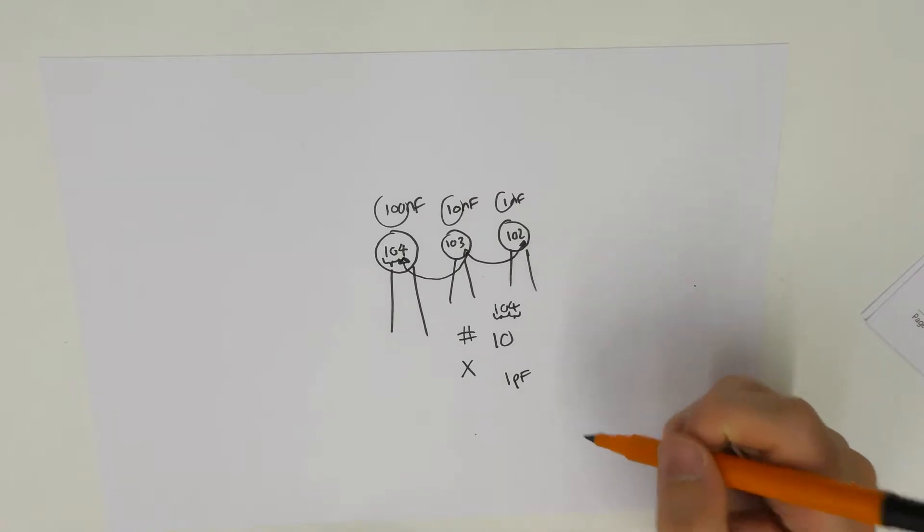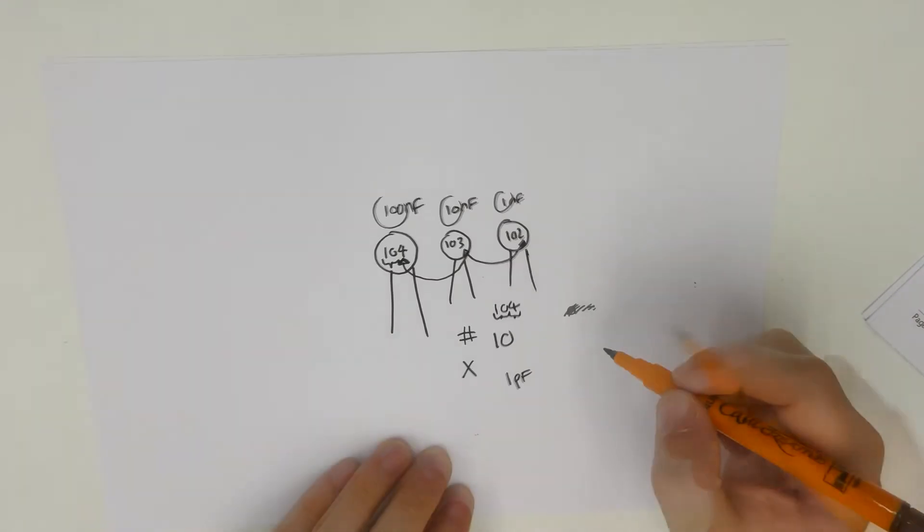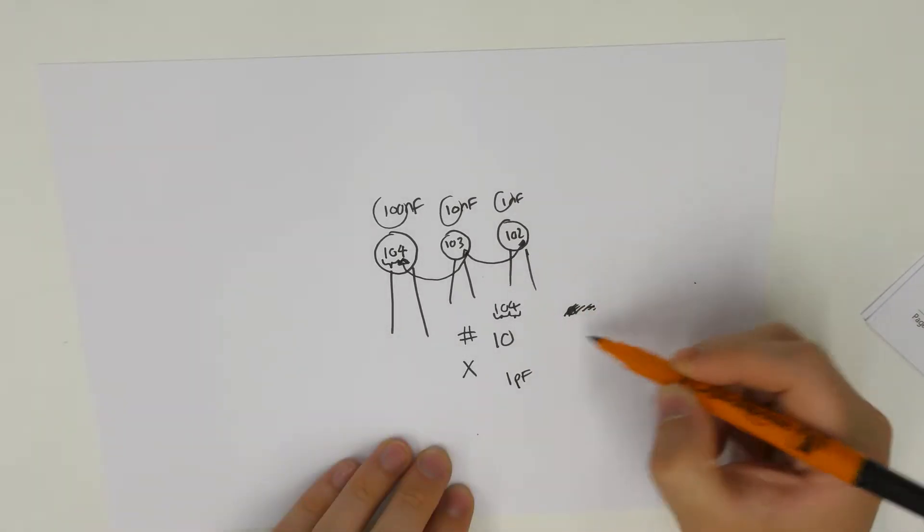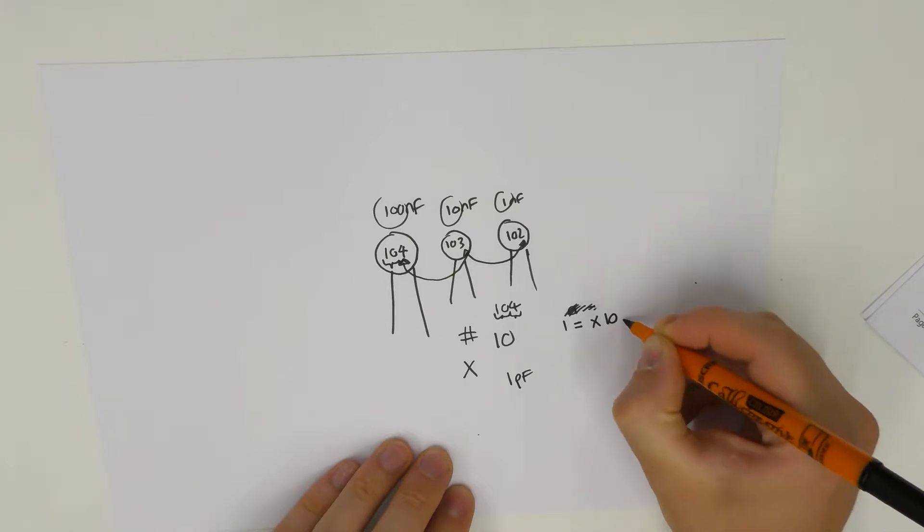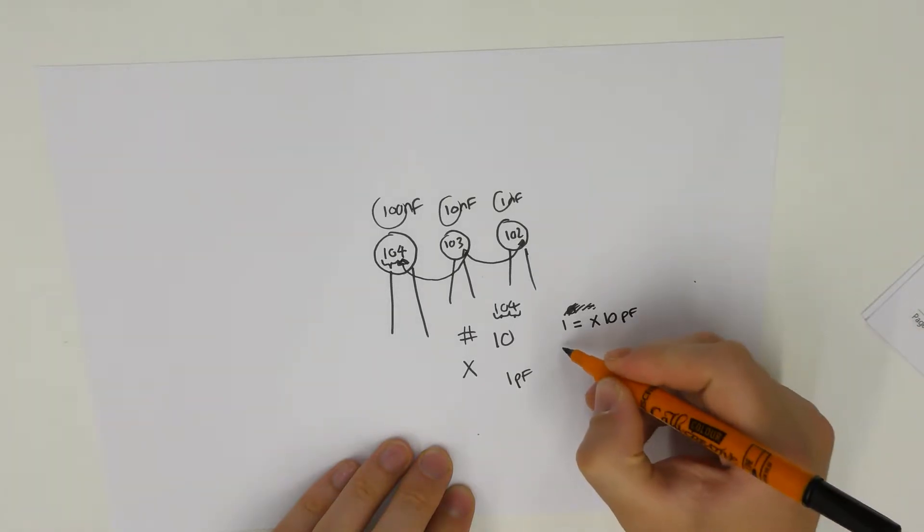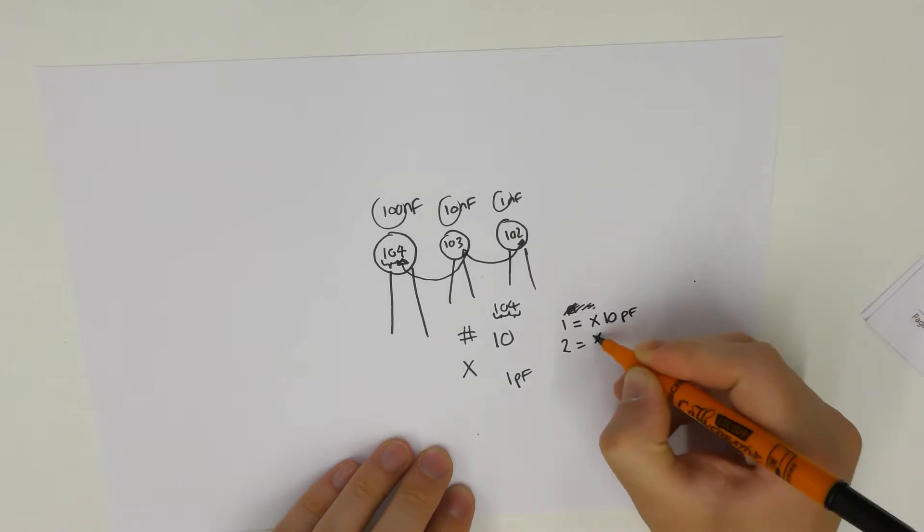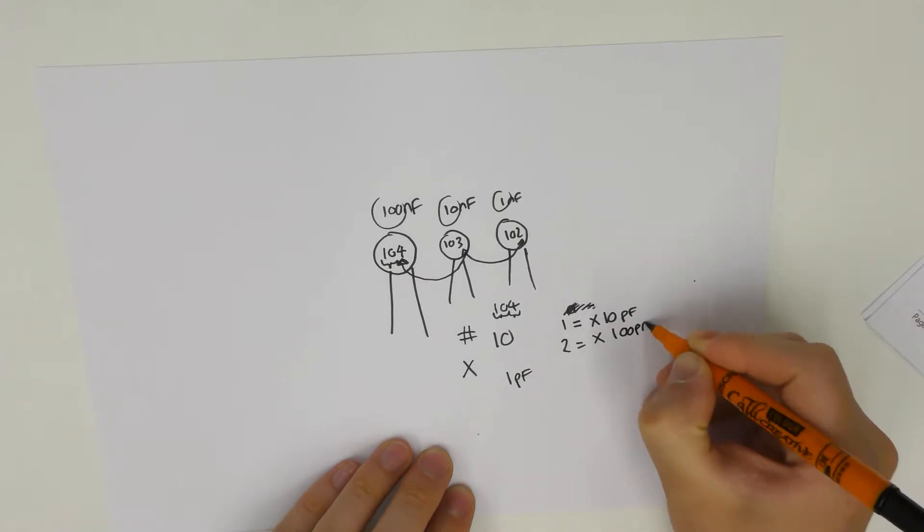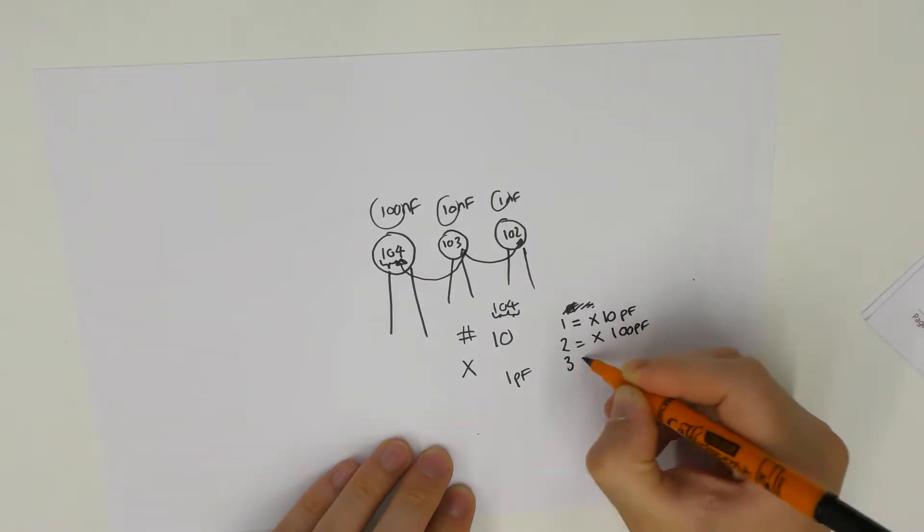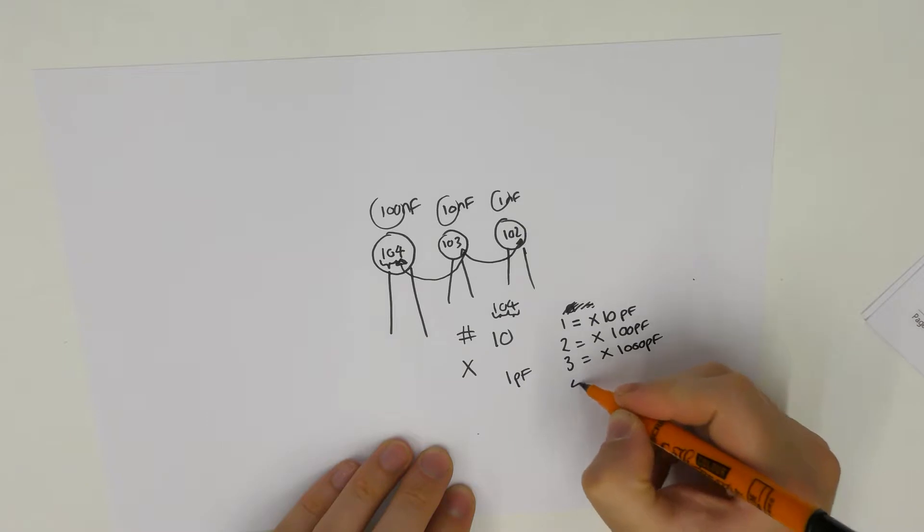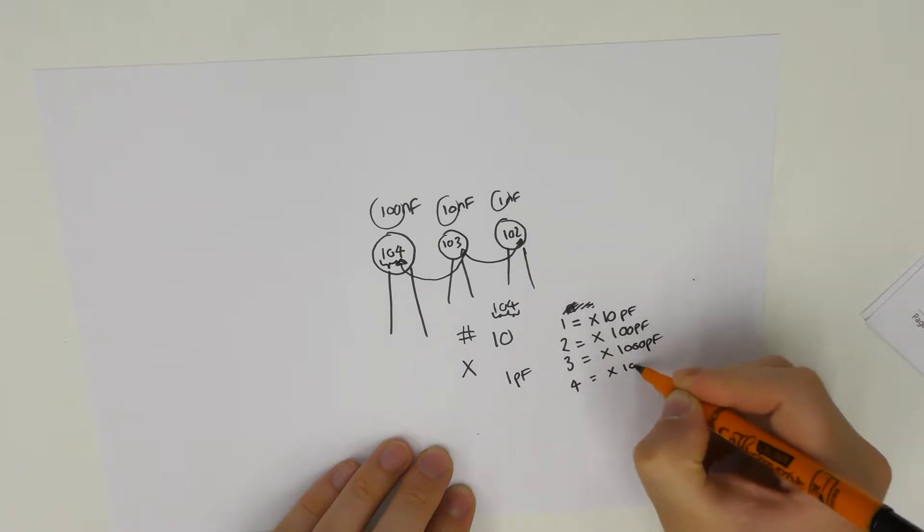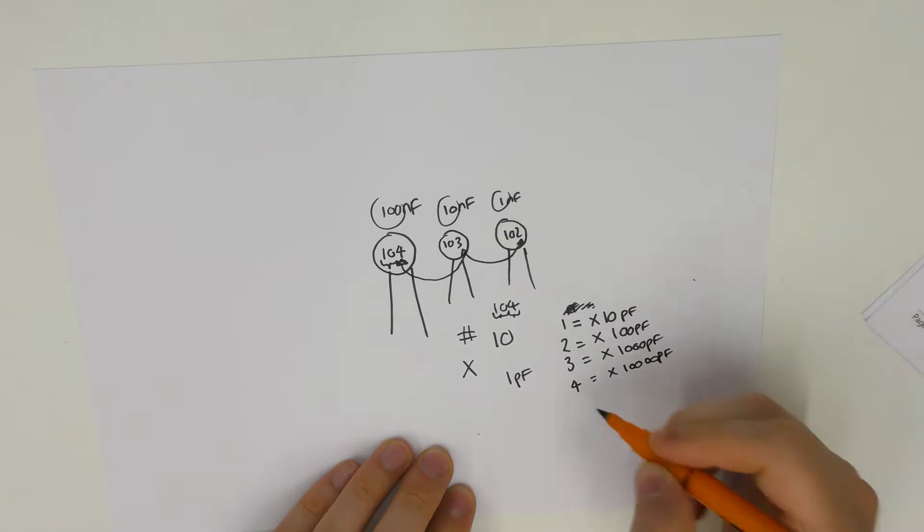Now, this number tells you how many zeros to multiply this thing by. You can see here I quickly wrote, I was about to write zero, but you don't actually get zero. So if the number was 1, then you're going to multiply it by 10 picofarads. If the number is 2, you multiply it by 100 picofarads. If the number is 3, you multiply it by 1,000 picofarads. And if the number is 4, you multiply it by 10 picofarads. So this number represents the number of zeros we have.